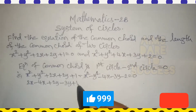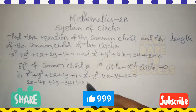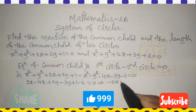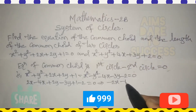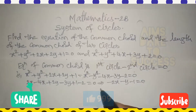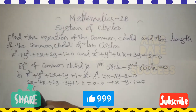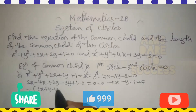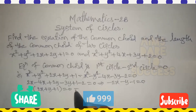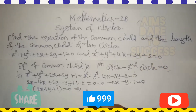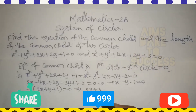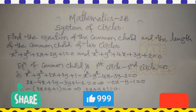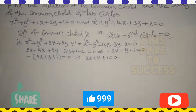x² − x² and y² − y² get cancelled. 2x − 4x = −2x, 2y − 3y = −y, and 1 − 2 = −1, equal to 0. Taking out minus common, we get 2x + y + 1 = 0, which is the equation of the common chord.